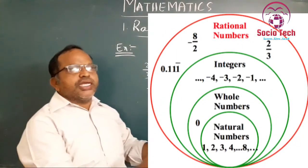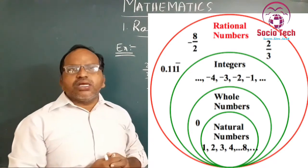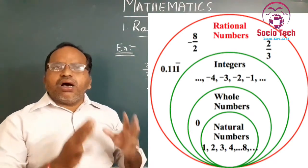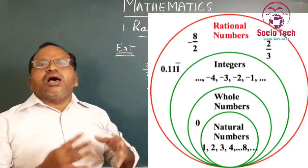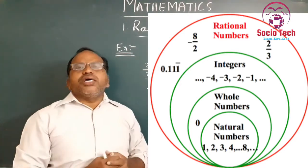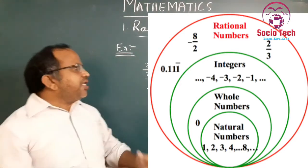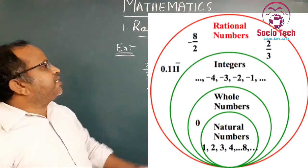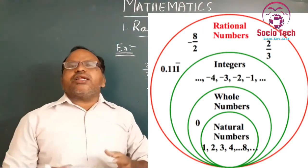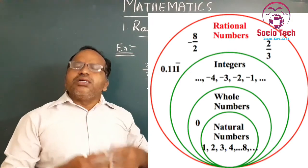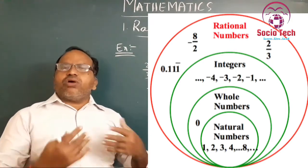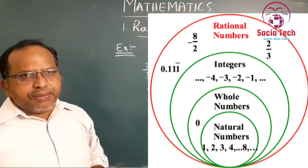From these examples, we conclude one thing: all natural numbers, all whole numbers, and all integers are part of rational numbers. All natural numbers — 1, 2, 3, 4, 5, 7, 8 — are rational numbers because we can express all of them in the form of p by q.